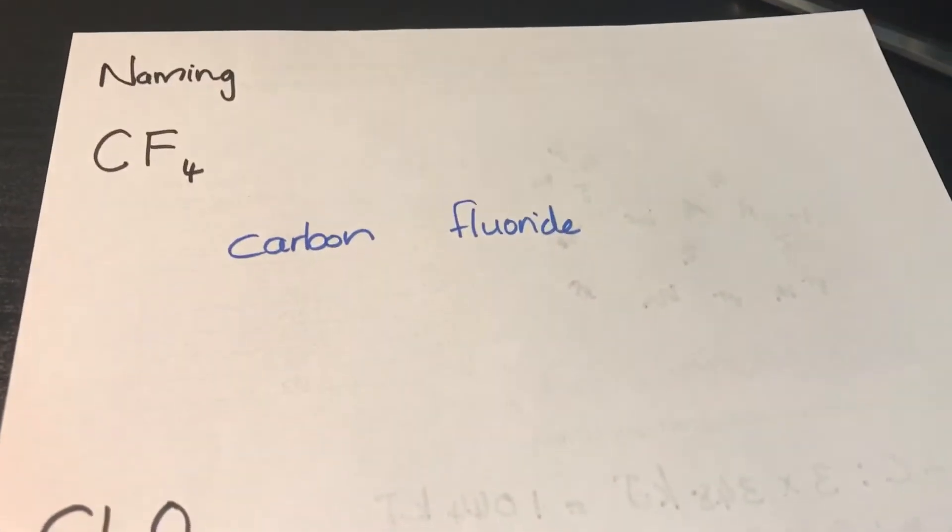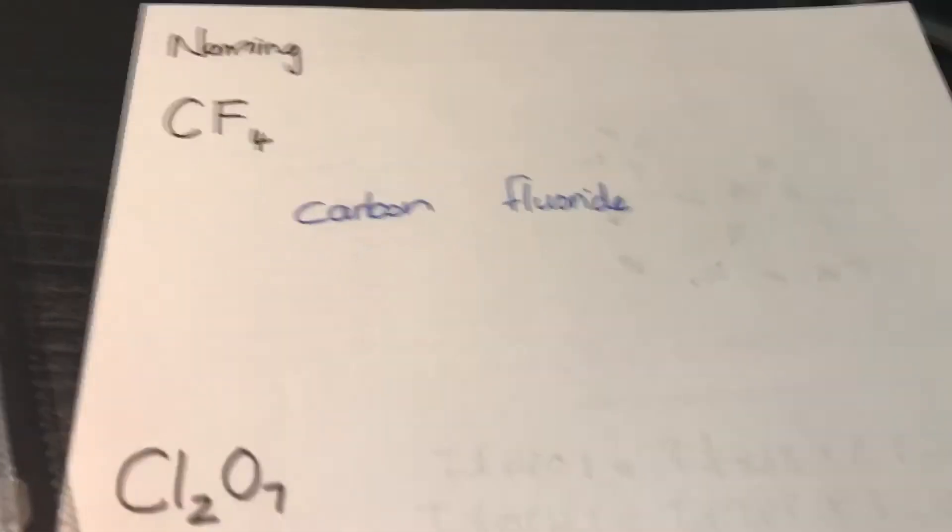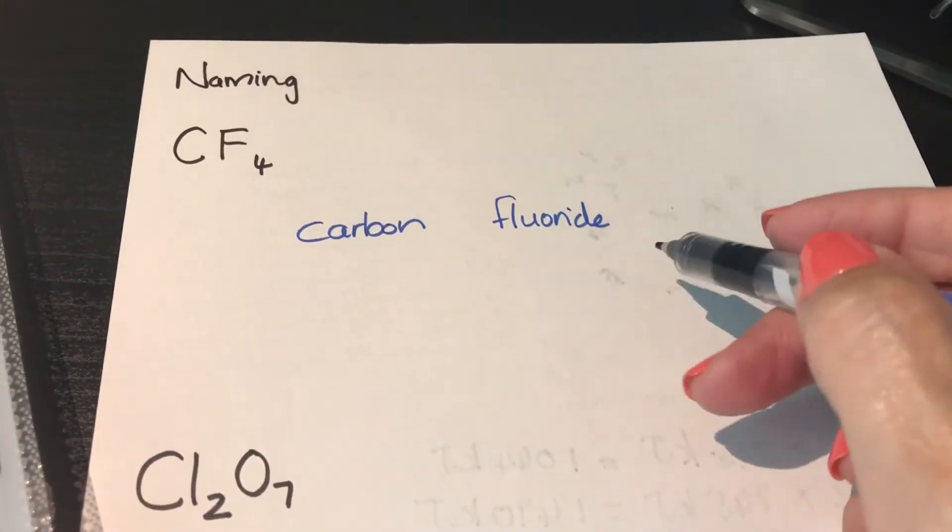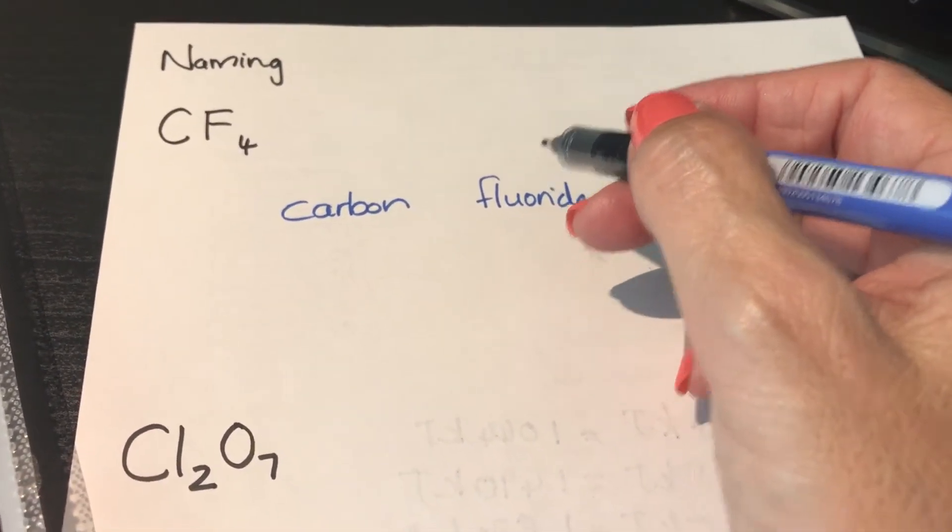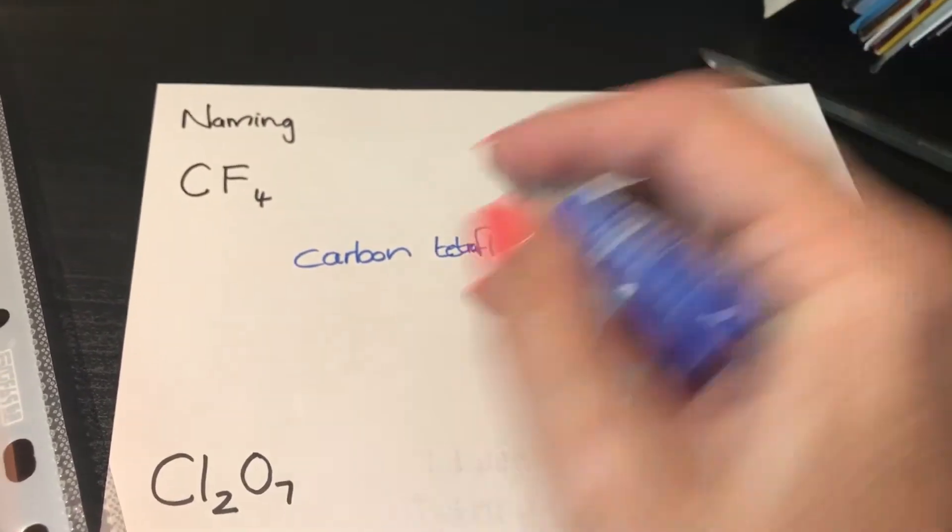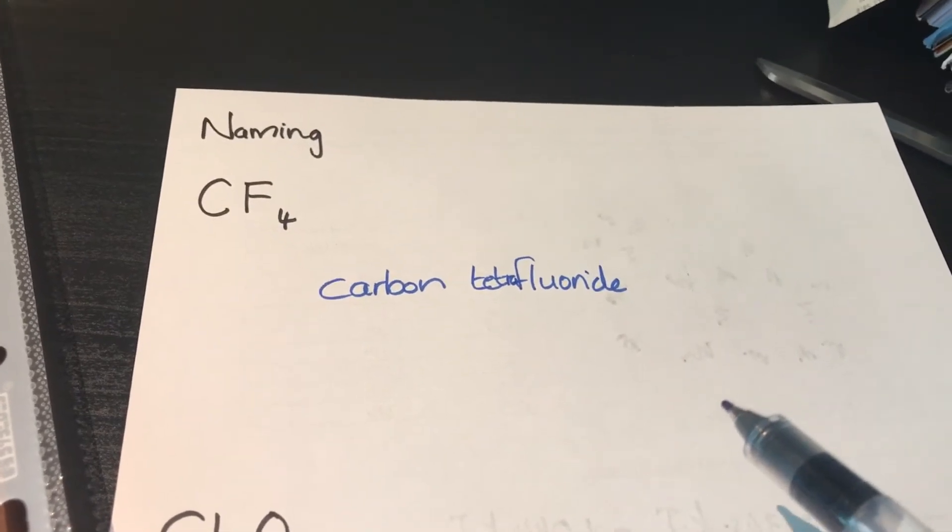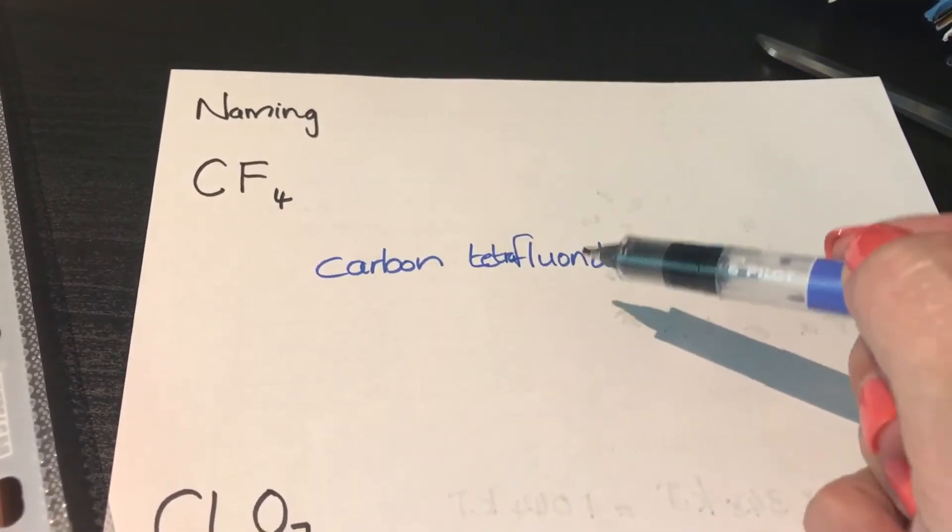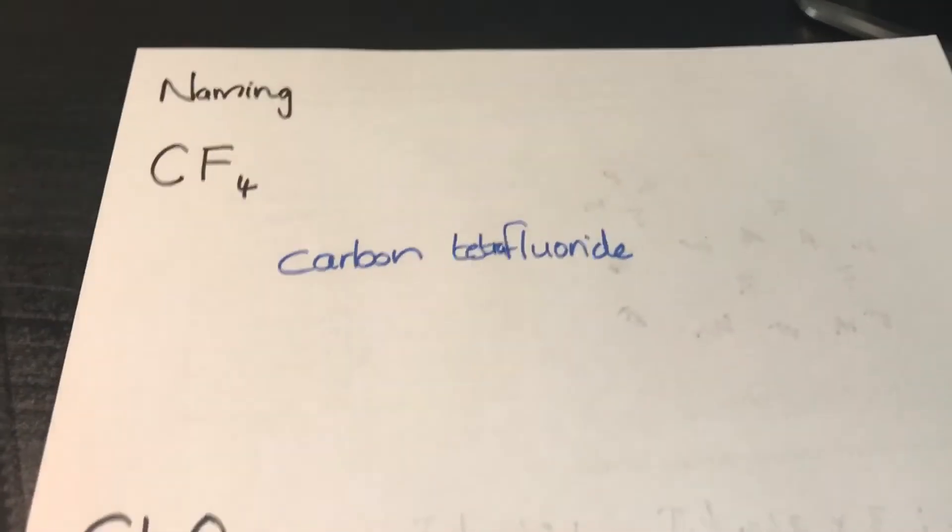I have four fluorines. Because of the four fluorines, I would have to put a prefix in front of the fluoride to tell me how many I have. The prefix in this case is tetra. So I have carbon tetrafluoride. I will use the prefix in front of that to indicate how many of the second element there are.